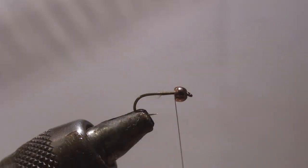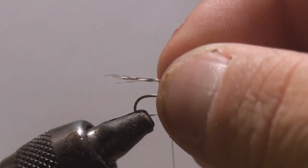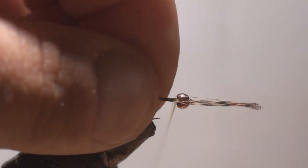For the tails, I'm going to use Coq de Leon here. You can use hen, you can use partridge, you can use mallard wood duck, whatever you want. I just like the Coq de Leon because it's barred, it doesn't get damaged easily, it's tough.